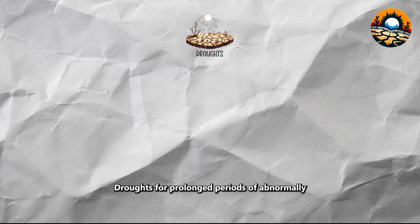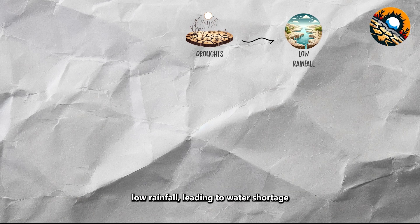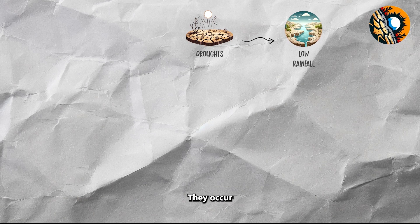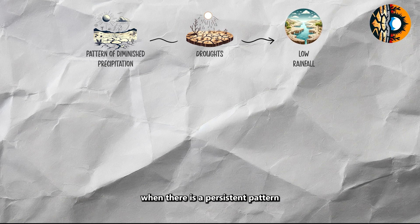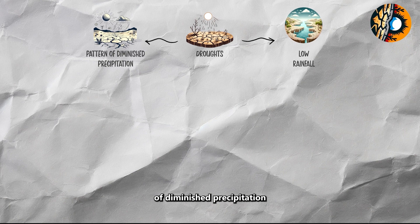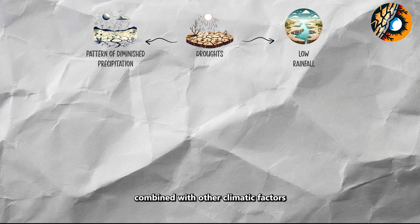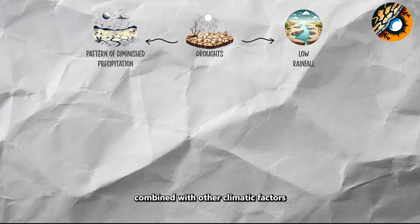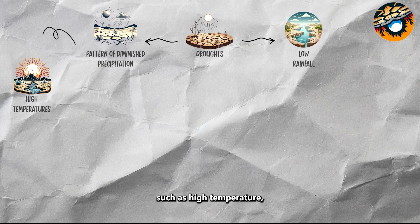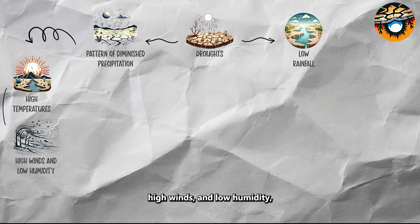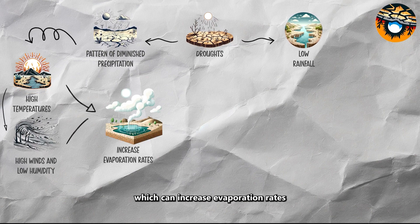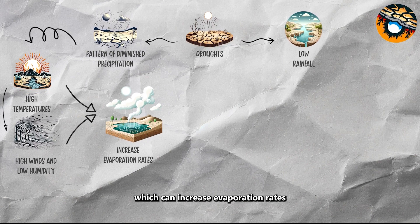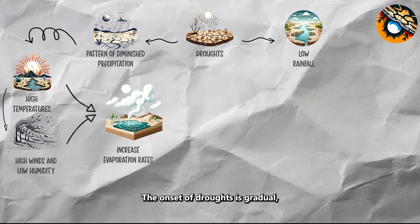Droughts are prolonged periods of abnormally low rainfall, leading to a water shortage. They occur when there is a persistent pattern of diminished precipitation combined with other climatic factors such as high temperatures, high winds, and low humidity, which can increase evaporation rates.